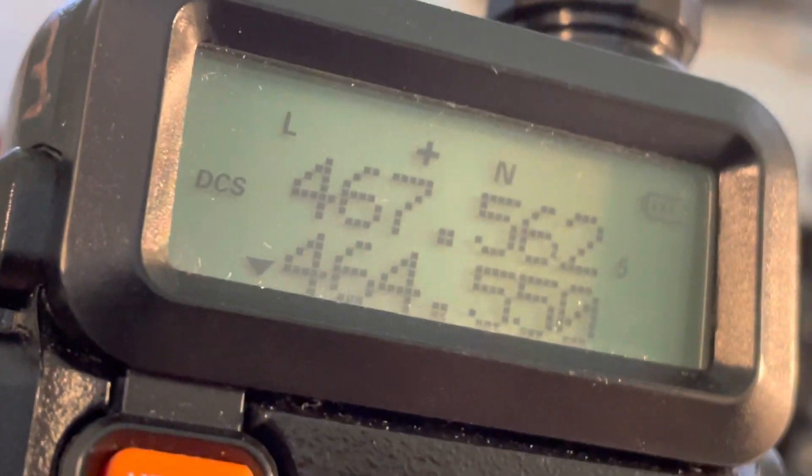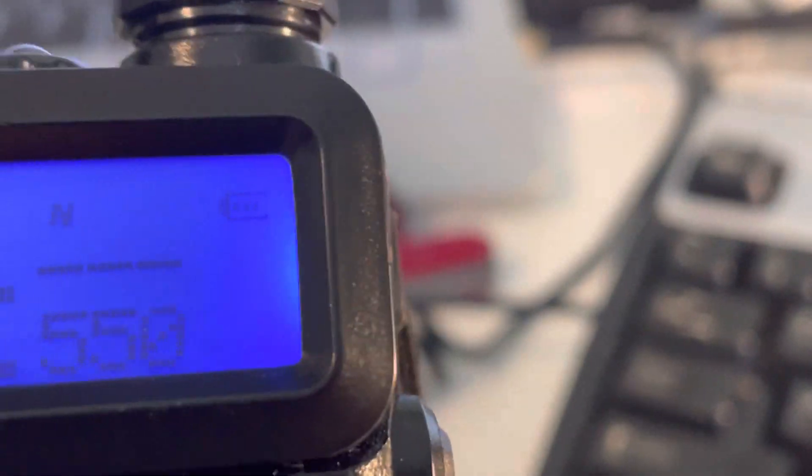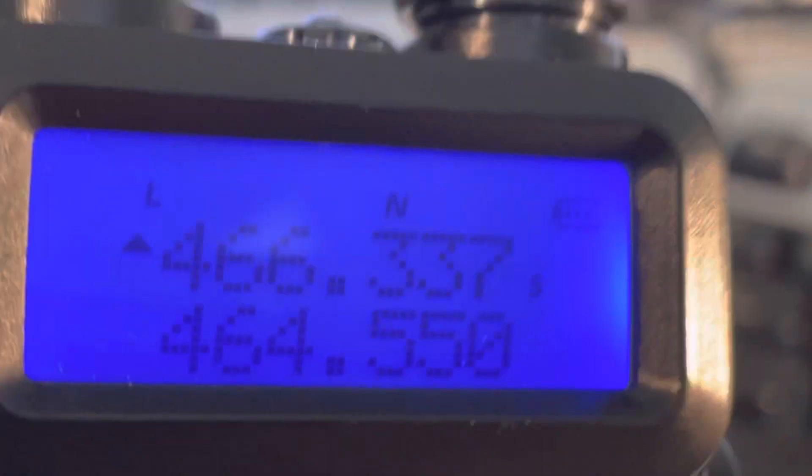And then they'll have another frequency or two that they're using for talk around. Usually the frequency for talk around will be one of the lower power frequencies, like one of these frequencies in the 466 and 461 range.